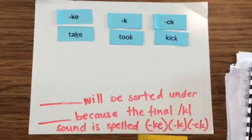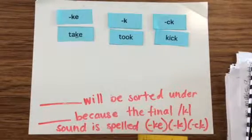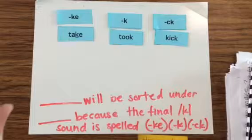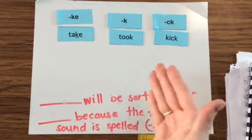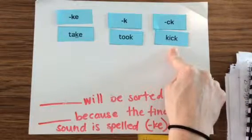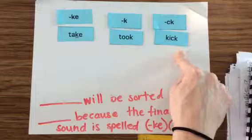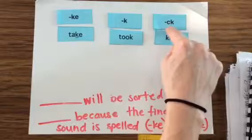This will help you because if you're spelling an unknown word and you know the pattern, you will know how to spell the word. If we're sounding out the word k-i-k, and I know that kick has the spelling pattern c-k, it will make it easier for me to spell because I know the word will end in c-k.